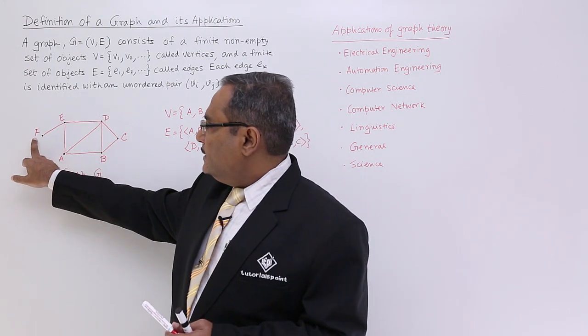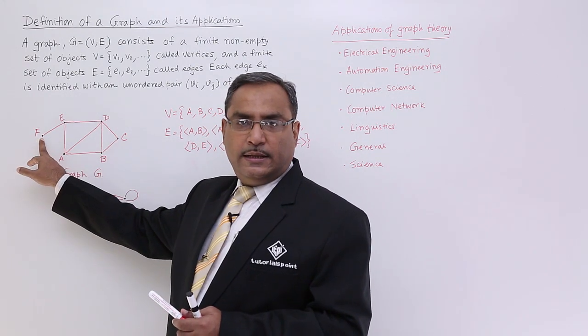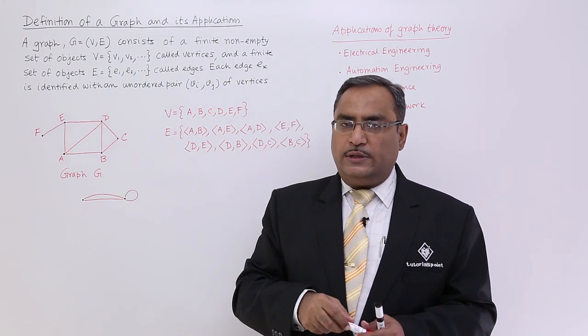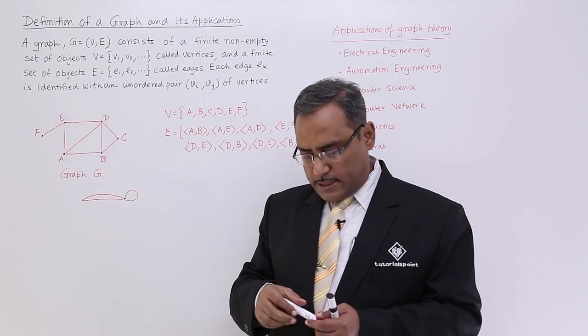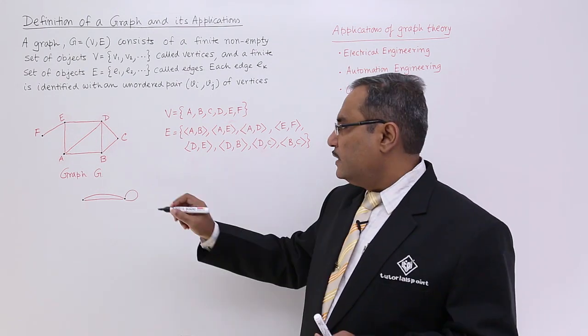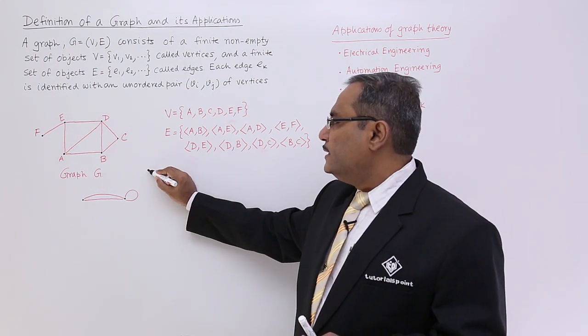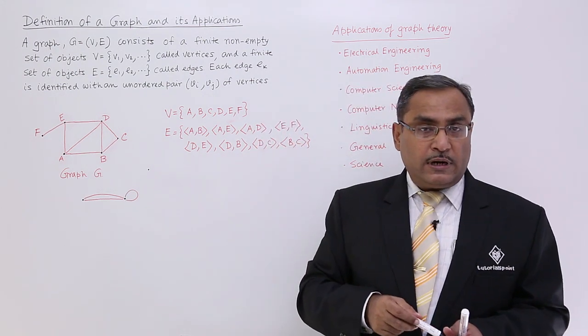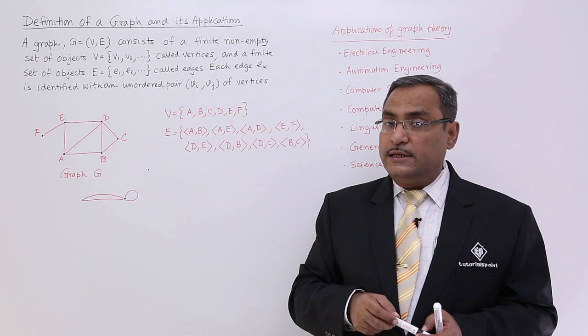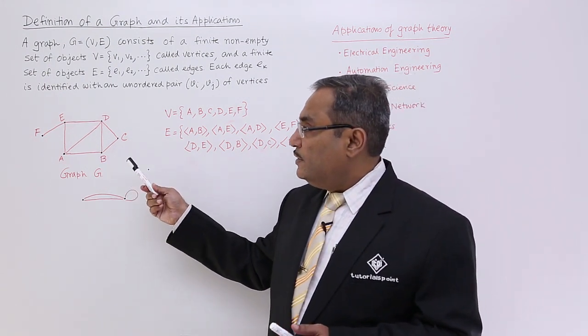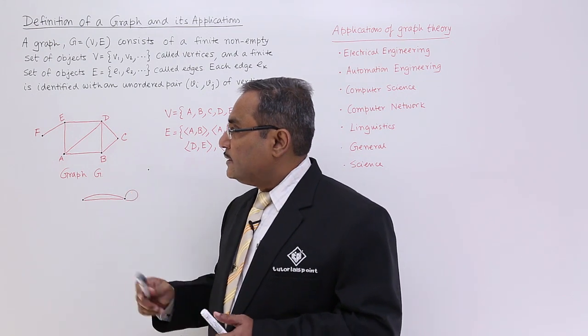This is known as the pendant vertex. That means here only one line has got connected. So that is why it is called pendant vertex. Sometimes we may have a vertex which is known as isolated vertex. No edge is connected with this particular vertex. It is known as isolated vertex. So pendant vertex, isolated vertex, we are having this parallel edges. These terminologies we have defined here in this particular example.